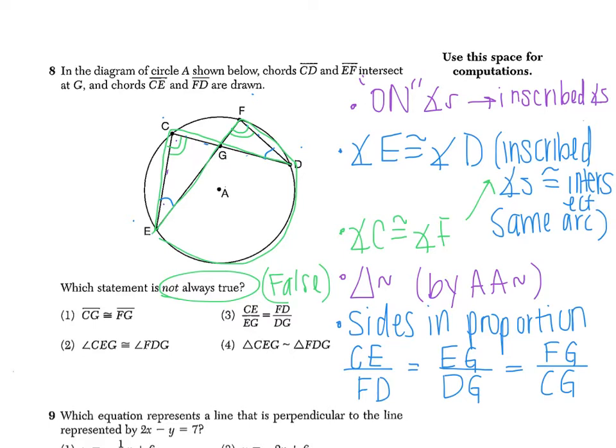So now I'm going to go through the options and see which one is not true. The first option says CG, segment CG, is congruent to segment FG. Now if our triangles are similar, segments are not necessarily congruent. They're in proportion, though. So I feel like this might be our true statement, or our false statement, not true. But I want to read through the other options to see if this is the one that we actually want to choose.